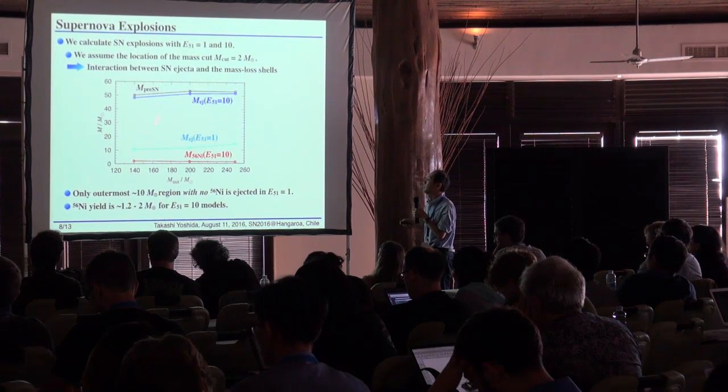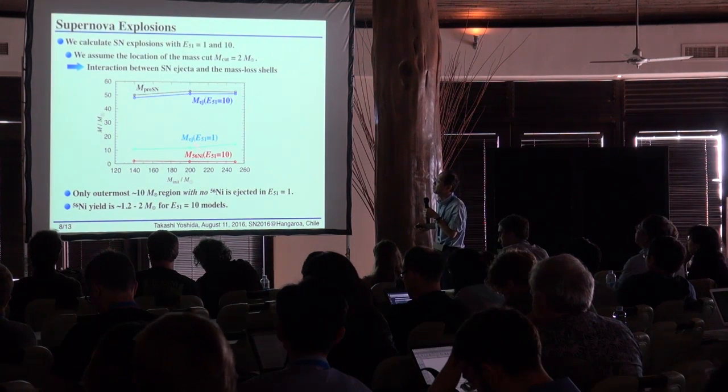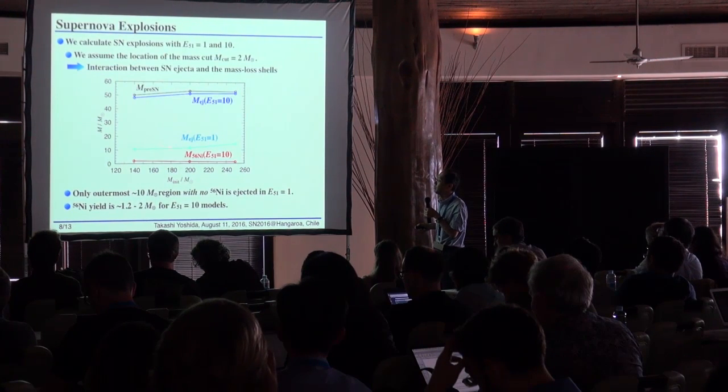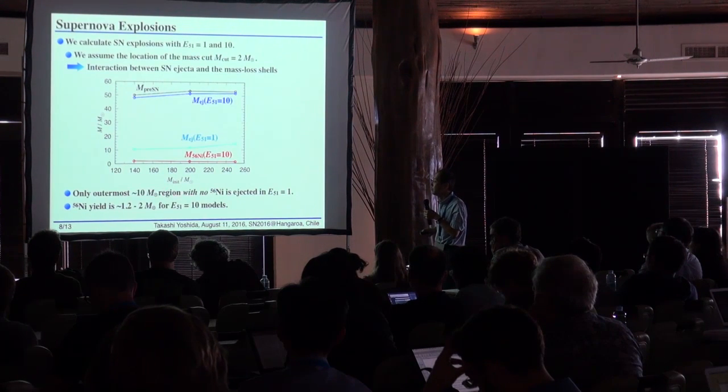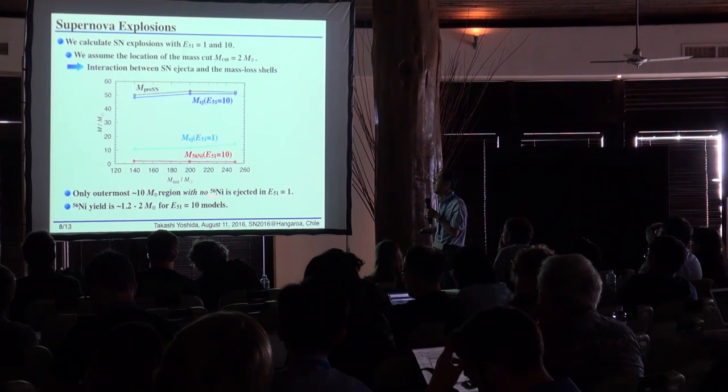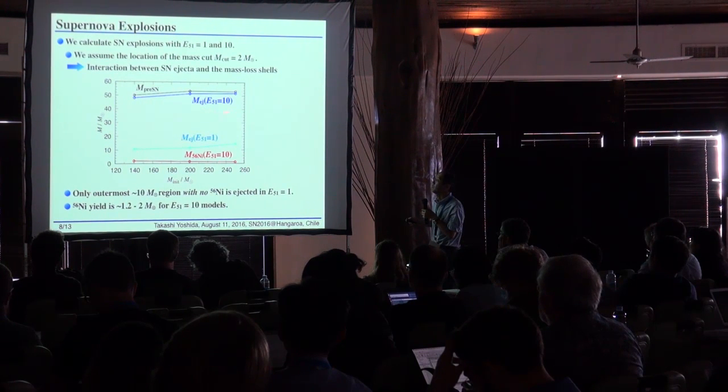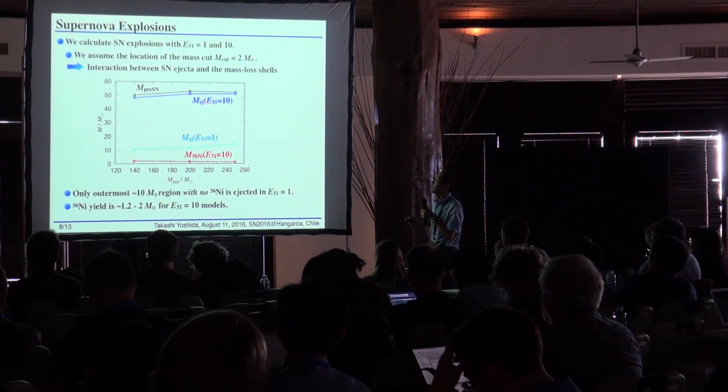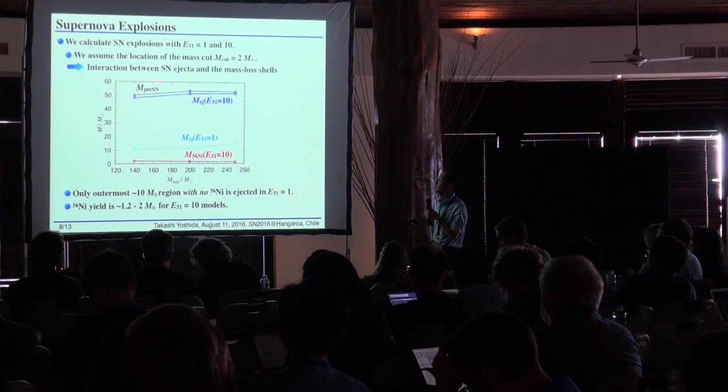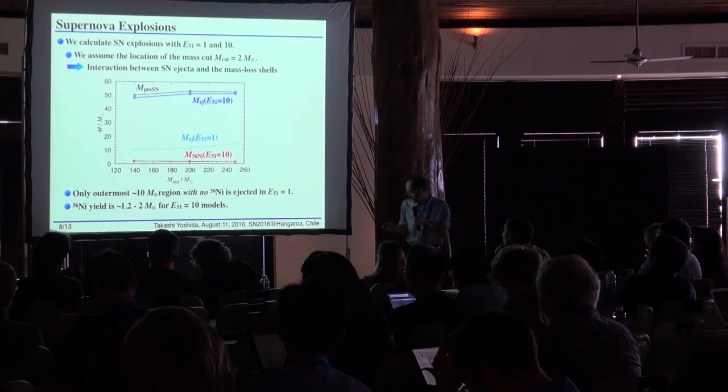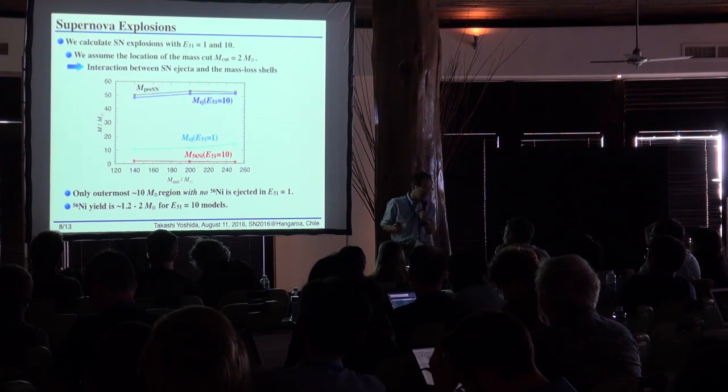Then we calculate the supernova explosions. Here is the result showing the ejecta mass. When we assume the explosive energy is very small compared to binding energy, only part is ejected. In the case of energy of 10 to the 51 ergs, all the mass inside is ejected. In that case, nickel-56 is about one to two solar mass.